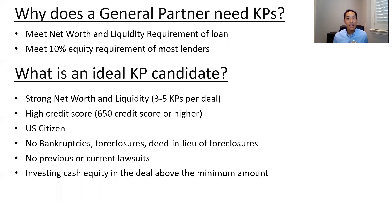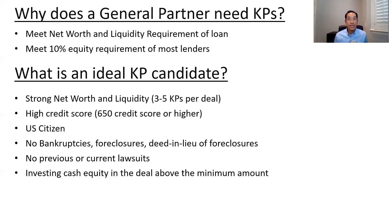What makes an ideal KP candidate? You want strong net worth and liquidity — ideally only three to five KPs per deal, the fewer the better. On a $15 million loan divided by three, you'd want most people to have around a $5 million net worth. You want a high credit score — 650 or higher — U.S. citizenship (non-citizens require a Fannie/Freddie waiver), no bankruptcies, no foreclosures, no lawsuits, and you want them investing cash in the deal. If the minimum is $50,000, aim for the $75,000 to $100,000 range to help meet the 10% equity requirement.